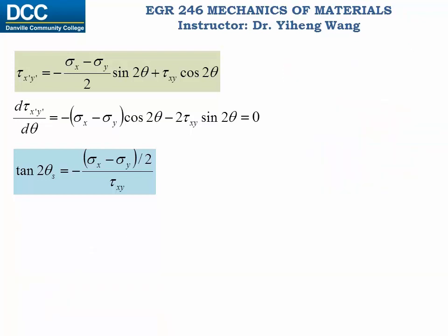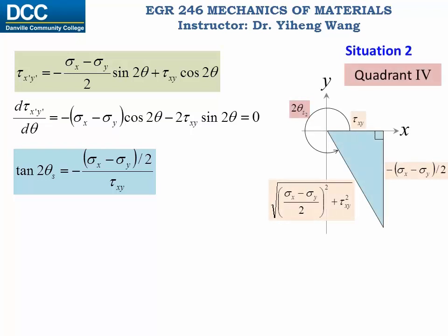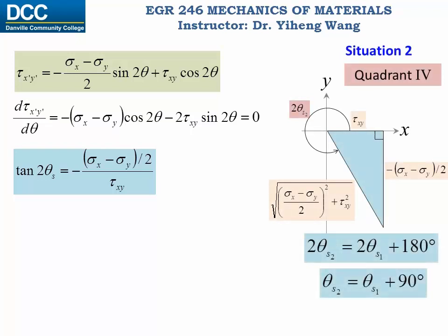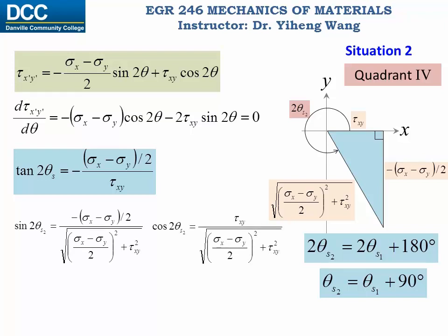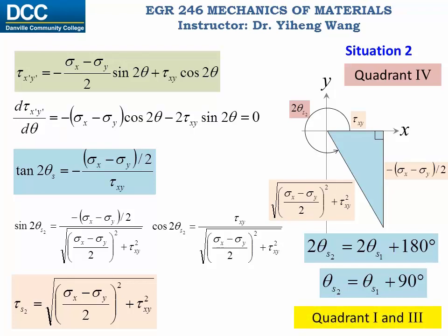For the second situation, angle 2*theta_s2 must be in quadrant 4. Once again 2*theta_s2 equals 2*theta_s1 plus 180 degrees, so theta_s2 equals theta_s1 plus 90 degrees. According to the reference right triangle we determine sine(2*theta_s2) and cosine(2*theta_s2), substitute these into the original function, and evaluate the second critical shear stress value. The same analysis can also be applied to two angles belonging to quadrants 1 and 3, and we derive the same equations.